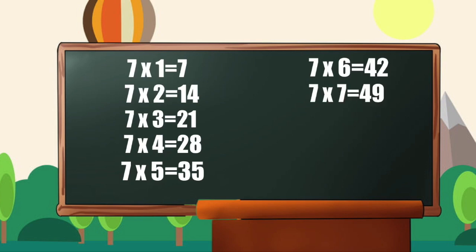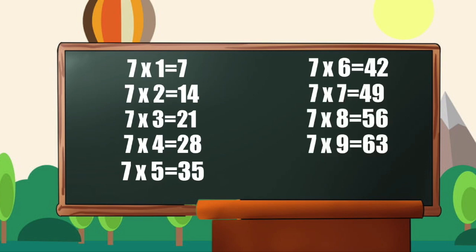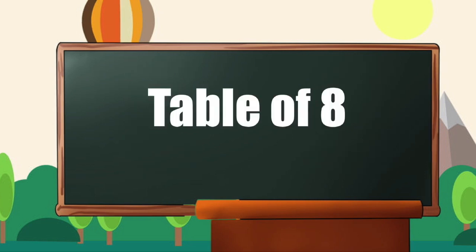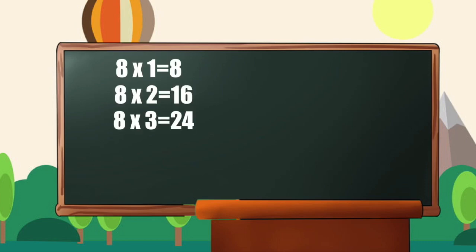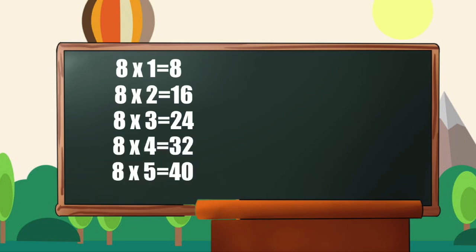7 6s are 42, 7 7s are 49, 7 8s are 56, 7 9s are 63, 7 10s are 70. Table of 8: 8 1s are 8, 8 2s are 16, 8 3s are 24, 8 4s are 32, 8 5s are 40.